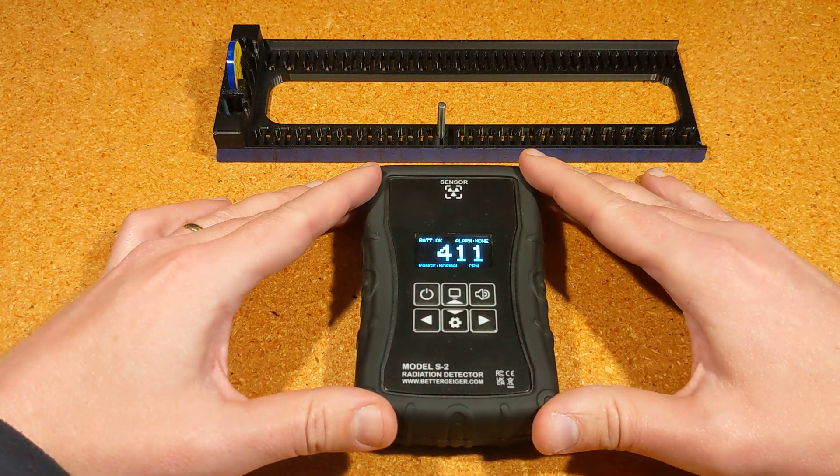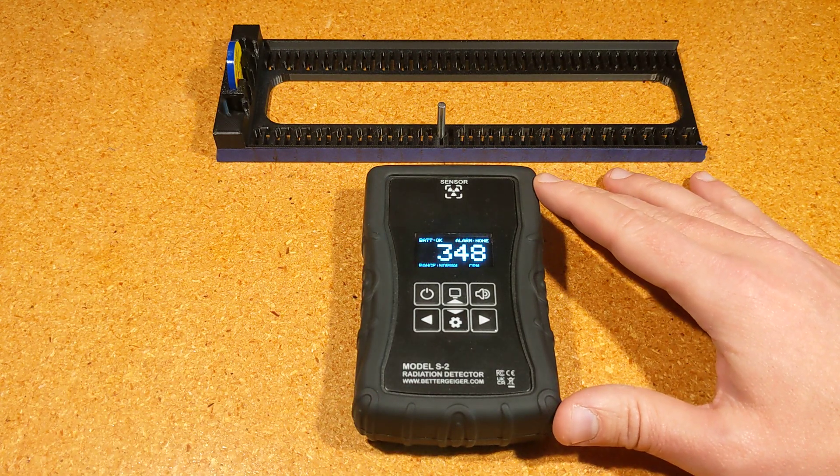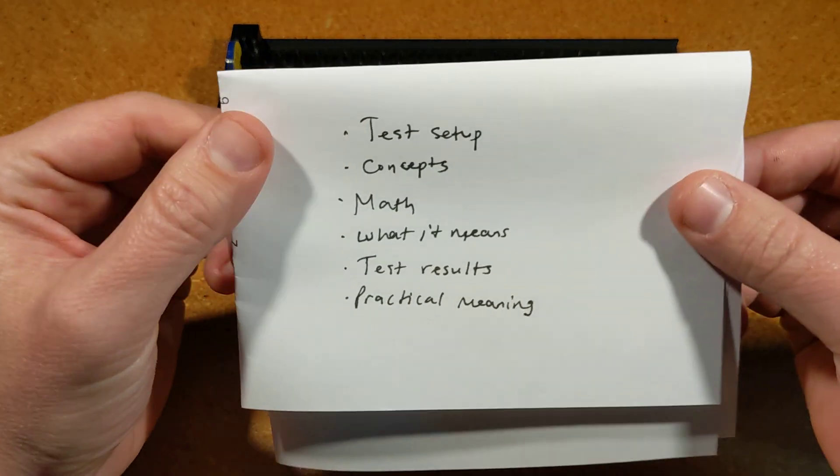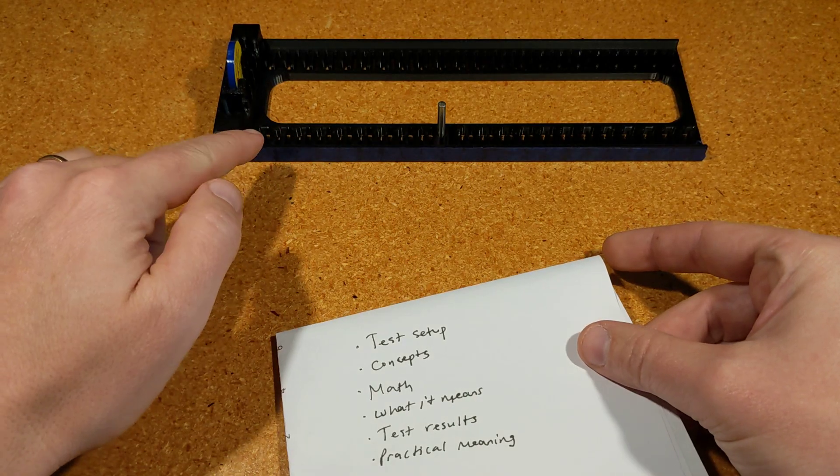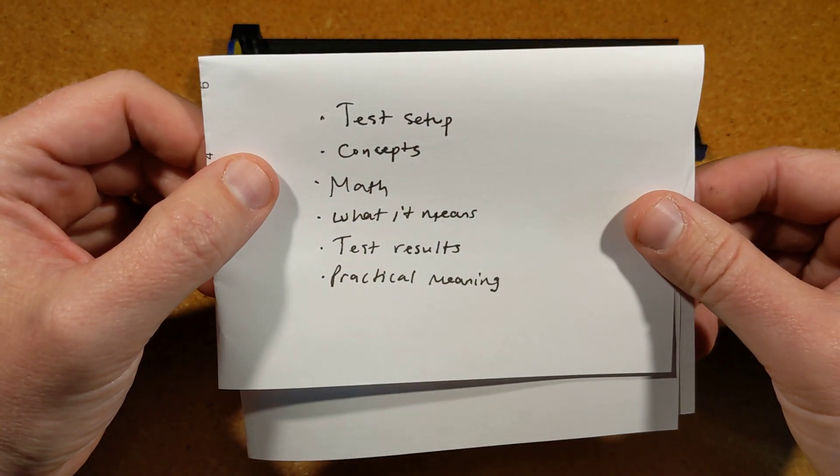This is specifically called the inverse square law, so we'll get into all that. I'll start with my outline: I'll talk about the test setup I have, do some demonstrations and show results with a little experimental setup.